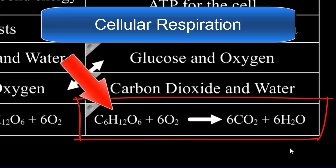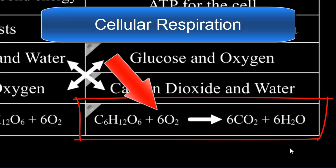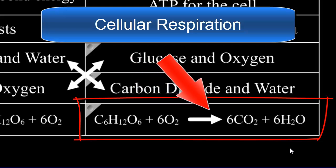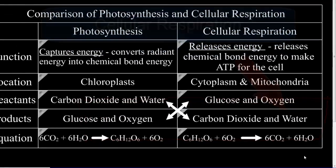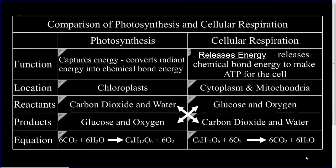You start with 1 glucose plus 6 oxygen molecules, and you get 6 carbon dioxide plus 6 water. Energy is released during this reaction and used to make ATP so the cell can maintain its metabolism.